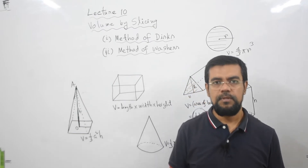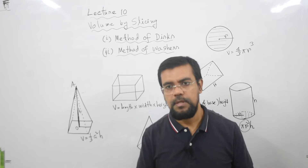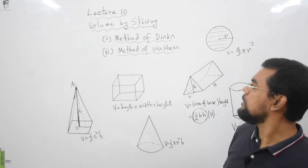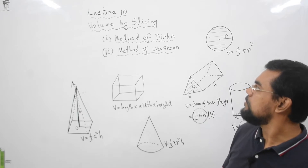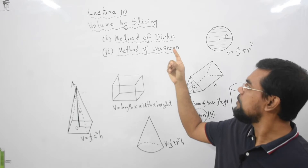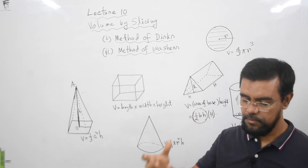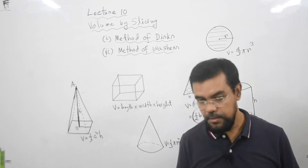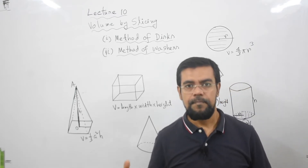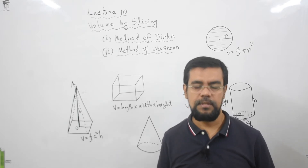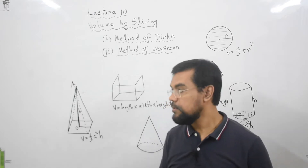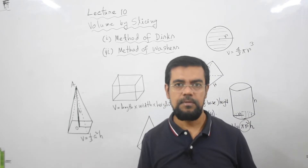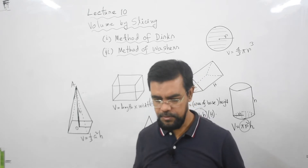Dear students and dear viewers, welcome to our lecture series of Calculus 2 — here Calculus 2 means integral calculus. This is our 10th lecture and today's topic is volume by slicing. We want to calculate the volume of a 3D solid material by the help of slicing or by taking a cross-section. There are two methods: the method of discs and the method of washers.